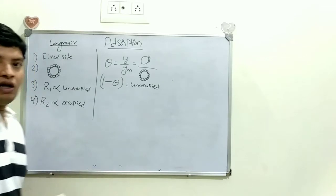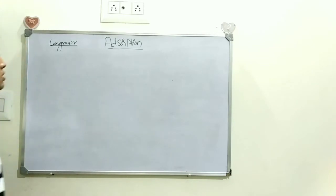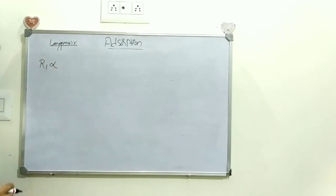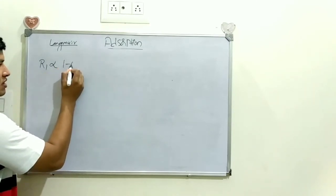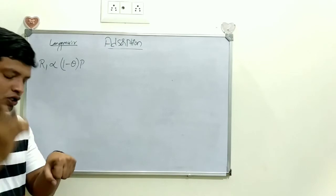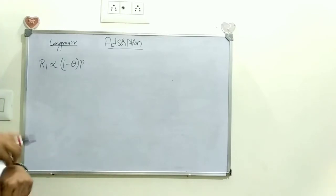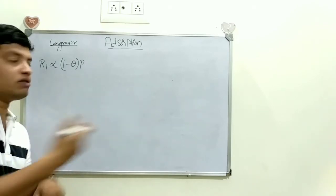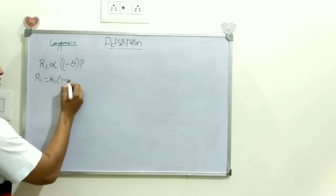Now, by taking this basis, we will derive the Langmuir equation. Rate of adsorption R1 is directly proportional to the number of sites unoccupied and also directly proportional to pressure, because if we increase the pressure, the amount of gas adsorbed also increases. Removing the proportionality constant and putting constant K1 (the adsorption rate constant), we get: R1 = K1(1 − θ)P.